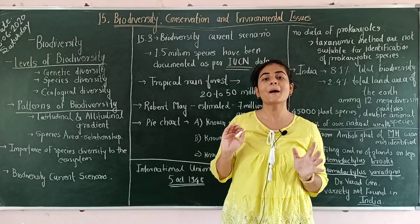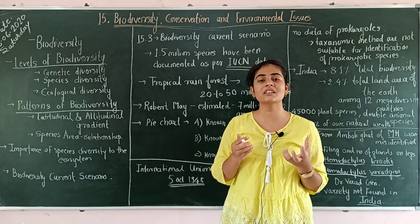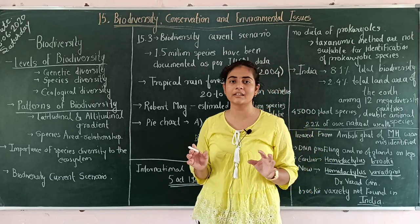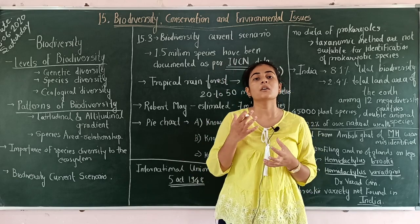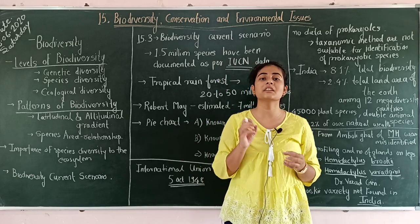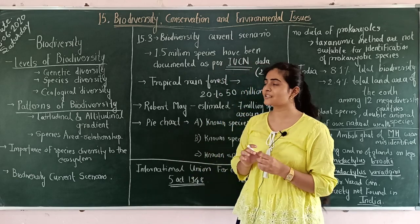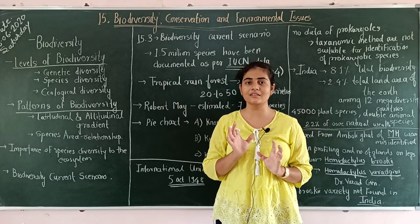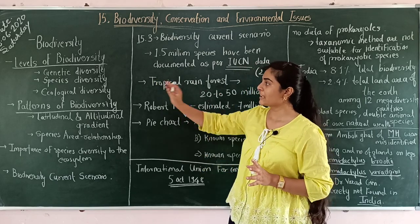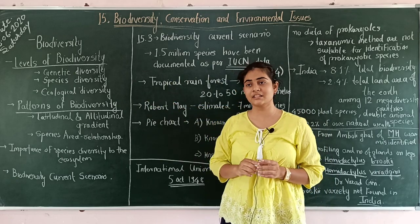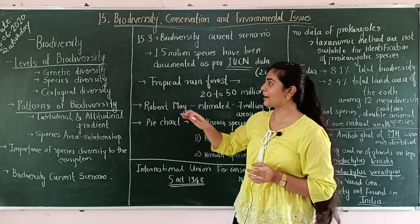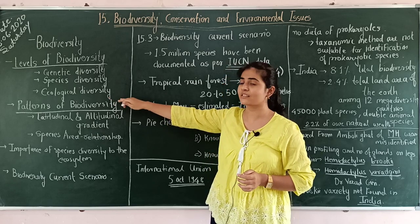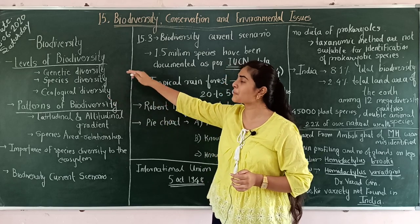First, what is biodiversity? There is information about the definition and the criteria. We are going to talk about genetic biodiversity, species biodiversity, and ecological biodiversity — three levels of biodiversity.